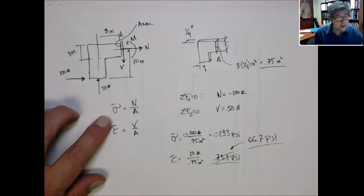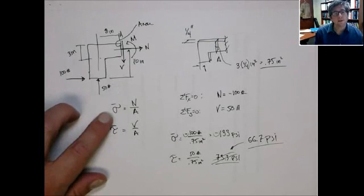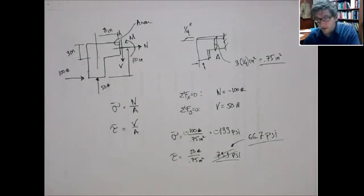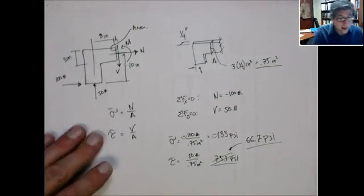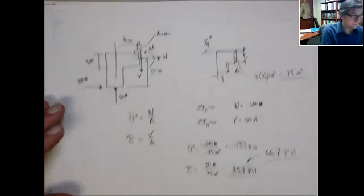Now, if you think about it, the obvious number you want to look at is: what is the stress at which this material fails? That value is what we refer to as the failure strength.